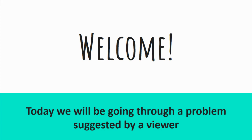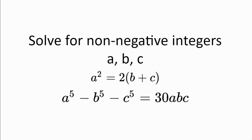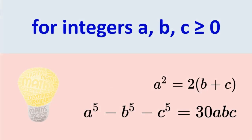Welcome! Today we'll be going through a problem suggested by a viewer. Solve for non-negative integers a, b, and c, where a squared is equal to 2 multiplied by b plus c, and a to the power of 5 minus b to the power of 5 minus c to the power of 5 is equal to 30abc. Please pause the video here and have a think about the problem on your own, before proceeding to the hints and solutions.